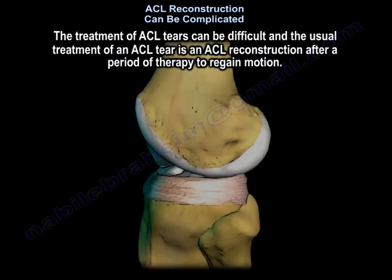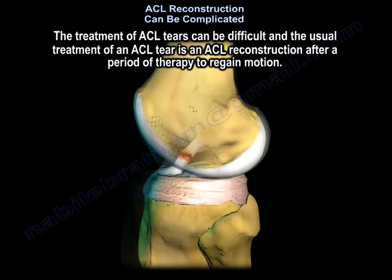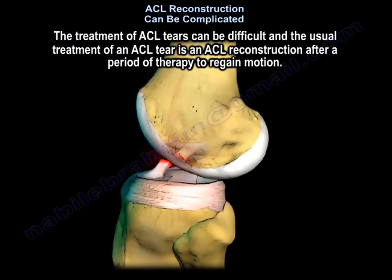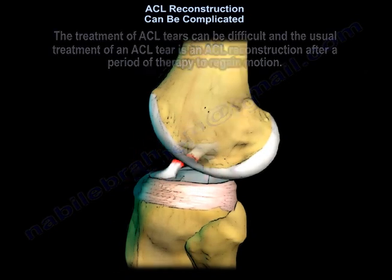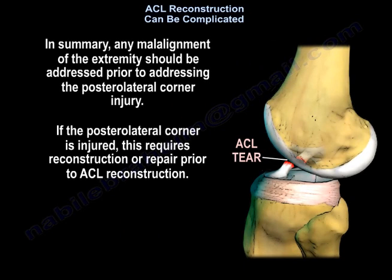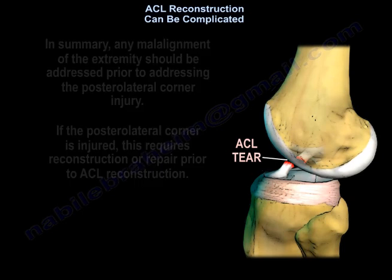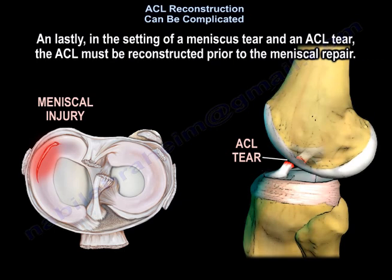The usual treatment of an ACL tear is an ACL reconstruction after a period of therapy to regain motion. In summary, any malalignment of the extremity should be addressed prior to addressing the posterior lateral corner injury. If the posterior lateral corner is injured, this requires reconstruction or repair prior to ACL reconstruction. And lastly, in the setting of a meniscus tear and an ACL tear, the ACL must be reconstructed prior to the meniscal repair.